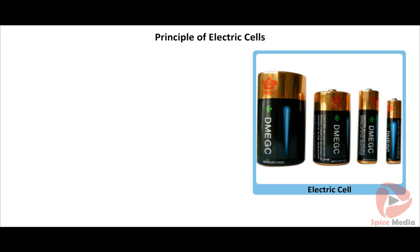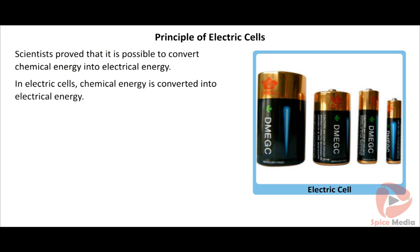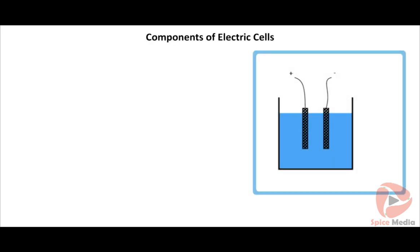Scientists made a number of experiments to understand chemicals and their reactions. We all know that during chemical reaction, heat energy is evolved or absorbed — meaning chemical energy is converted into heat energy. Scientists proved that it is also possible to convert chemical energy into electrical energy. This invention gave us a special device named the cell.